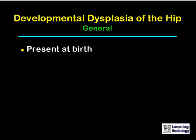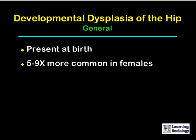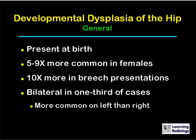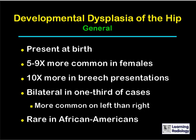Developmental dysplasia of the hip, also called congenital hip dysplasia or congenital hip dislocation, is present at birth. It is five to nine times more common in females and ten times more common in babies born by breech presentation. It is bilateral in about a third of cases, and when unilateral, it is more common on the left than the right. It is much more common in Caucasians and rare in African Americans.